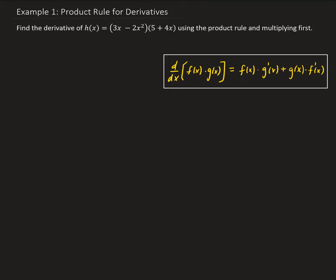In this example, we want to find the derivative of h of x, which is defined as 3x minus 2x squared times 5 plus 4x. We want to do this using the product rule, and then towards the end we can verify our result by expanding this function out and then taking the derivative term by term.